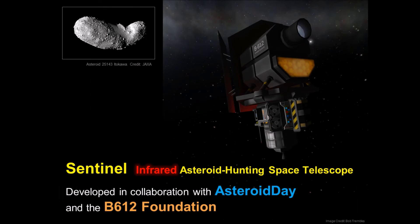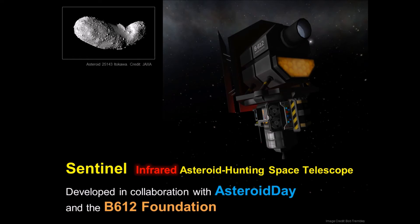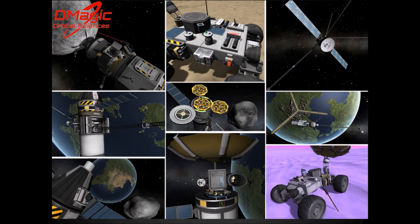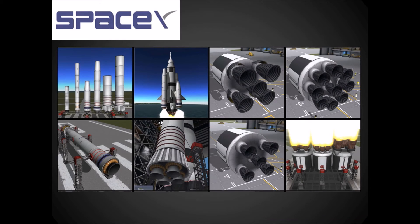There's another mod called Asteroid Day, developed in collaboration with the B612 Foundation. It includes an infrared asteroid-hunting space telescope and missions to find and catalog asteroids. This is the B612 Foundation's privately funded asteroid hunting mission — it's supposed to go up in a couple years. There's also a mod that adds a whole bunch of different science parts: a magnetometer boom, solar particle collectors, surface samplers, and an absolute ton of different science equipment that you can add onto your landers and spacecraft.